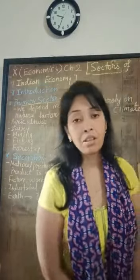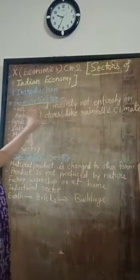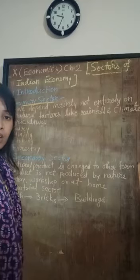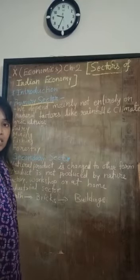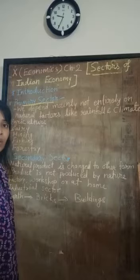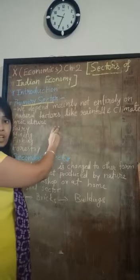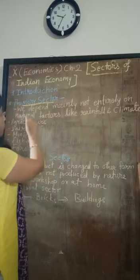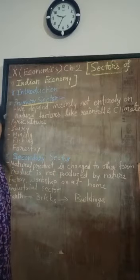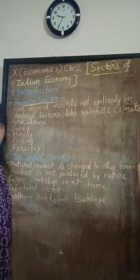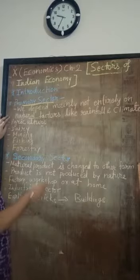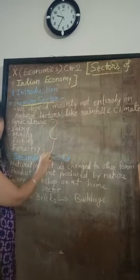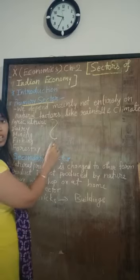Let's start with the primary sector. As the name suggests, it is related to primary activities. Everything that relates directly to nature would come under the primary sector. For example, dairy, mining, fishing, and forestry — all these are directly dependent on natural resources.